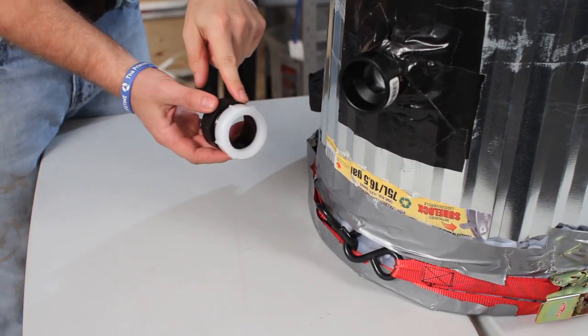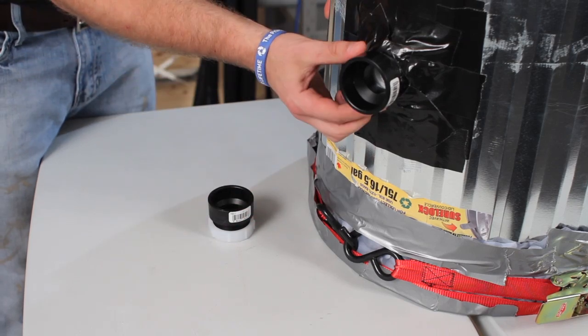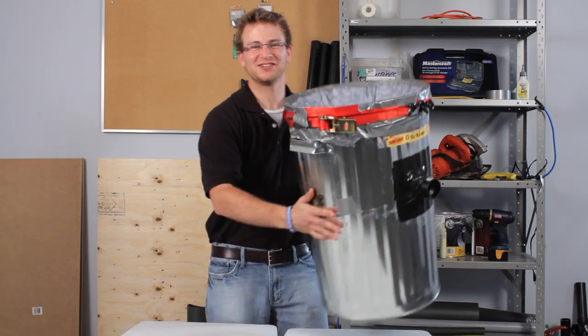We simply glued and duct taped these plumbing fasteners onto the outside. Screwing would provide a more secure fit, but we didn't want any protrusions on the interior walls that might interfere with the air flow. Alright. Now, let's go shoot some air.